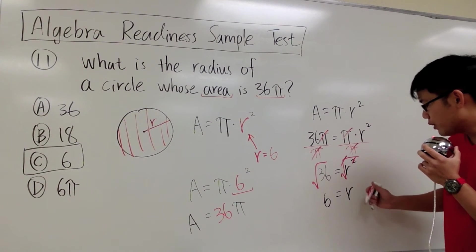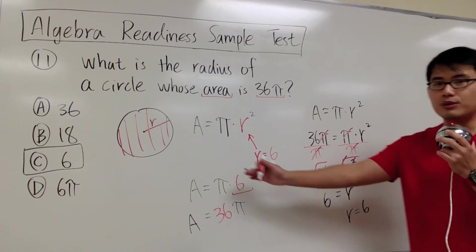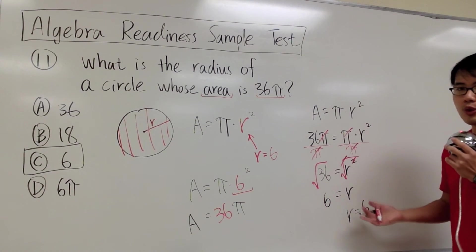And you see, 6 = r. Of course you can say r will be 6. And that's pretty much how we got that as well. And as I said, this is just a more algebra way to do the question.